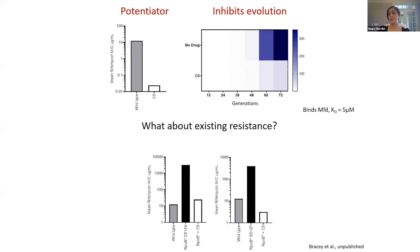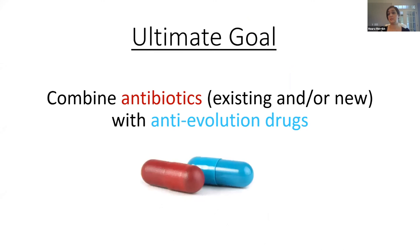This was really exciting — that we might have compounds that can reverse rifampicin resistance, inhibit evolution, and make cells more sensitive. The ultimate goal is to combine antibiotics — existing or new — with anti-evolution drugs in the clinic to reduce or inhibit the development of antimicrobial resistance, and even potentially reverse resistance. The reversal of resistance we've seen is likely specific to rifampicin, given that these compounds target MFD and MFD interacts with RNA polymerase. But all the other features — inhibiting evolution and potentiation — are unlikely to be rifampicin-specific, and in fact our data says it's not.